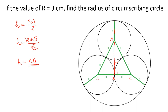Now, the centroid divides the median in the ratio 2 to 1 from the vertex. So OA equals 2 by 3 of the height, and the height is r root 3.